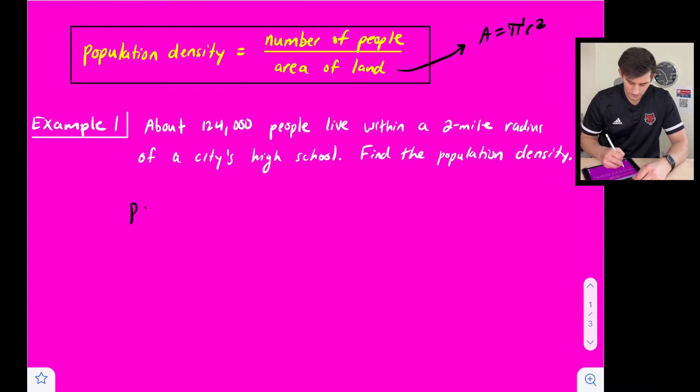So we'll say pd for population density is equal to 124,000 people divided by pi, and we're in a two mile radius so that is two squared. So this is 124,000 divided by four pi.